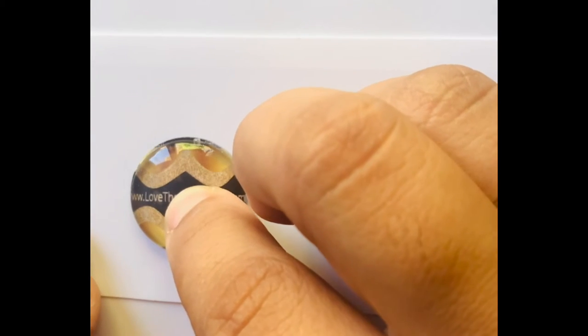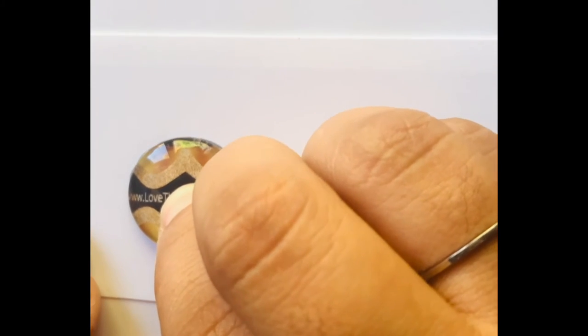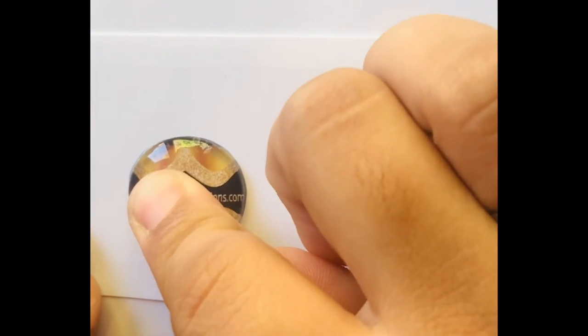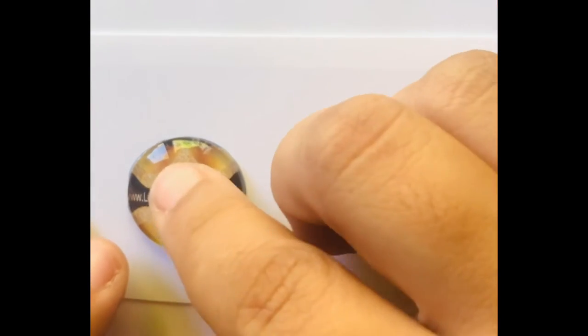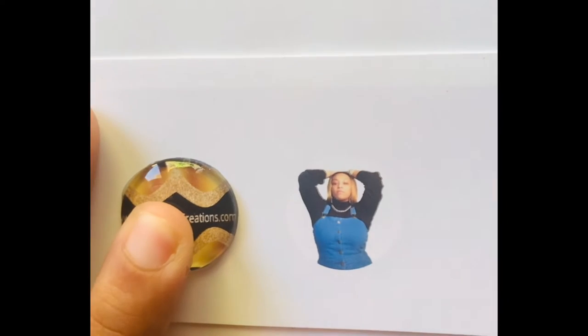Once you get your mod podge and your glasses on top, you want to press down firmly. You don't want to move around too much because if you press too hard and your finger is moving around, your glass is going to slip off of your image and you'll have to do the whole process over again.